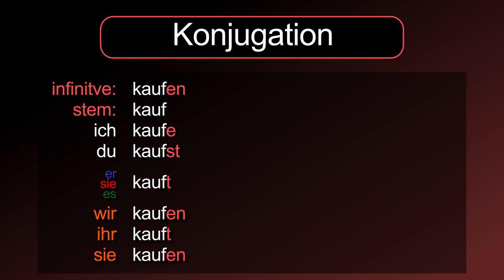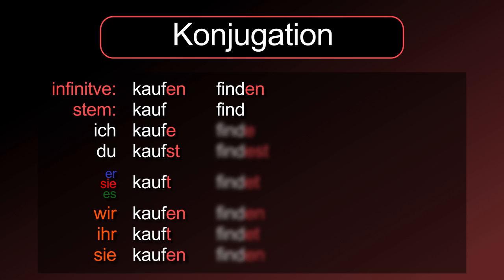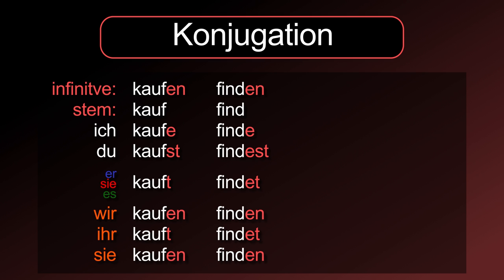In most cases, if the word stem ends on d, t, m, or n — for example, finden — then you have to add an extra -e for the second and third person singular, as well as the second person plural: ich finde, du findest, er/sie/es findet, wir finden, ihr findet, sie finden.